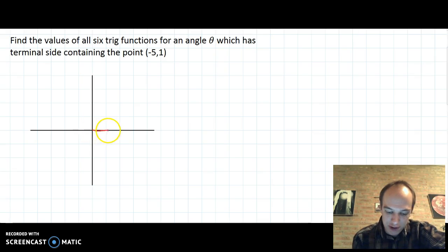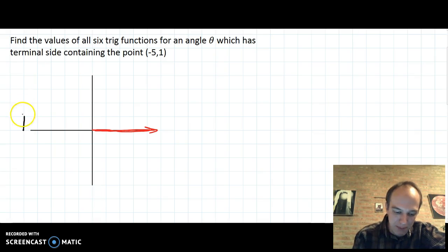So we first are going to draw the angle. I'm going to draw the initial side on the positive x-axis as usual. Then I'm going to locate this point (-5, 1). So negative one, two, three, four, five, and up one. My point lies right here. So I'm going to draw the terminal side of the angle and locate the angle theta right here.